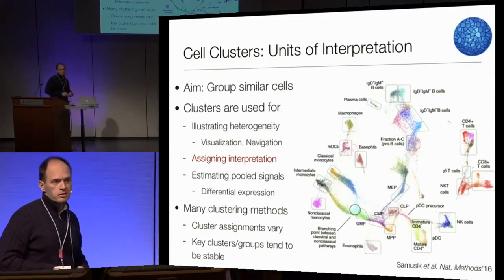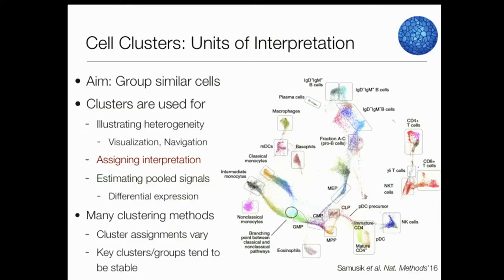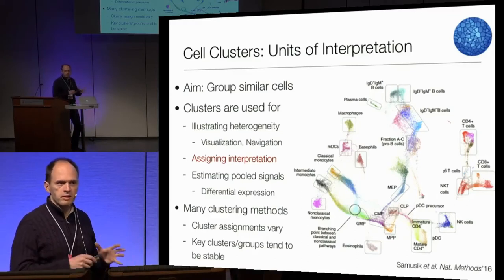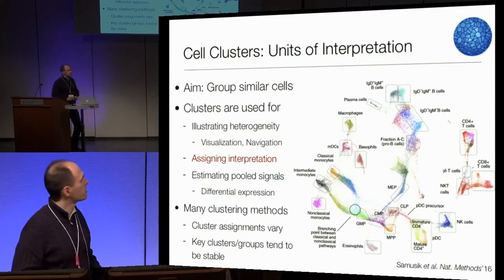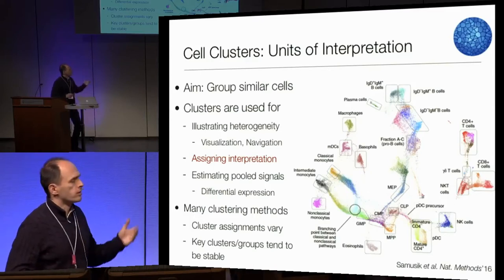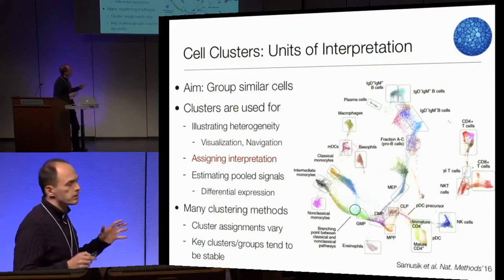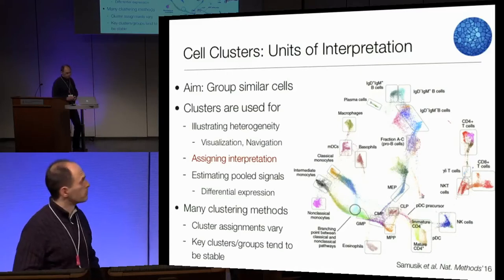There are quite a few clustering methods. You've just seen the talk about different trajectory construction methods, and these are much more exotic — as you might imagine, there are ten times more clustering methods. I'll try to emphasize what the key distinctions are between some classes of these approaches. The results of different clustering methods will vary, not only depending on the methods, but often on the parameters. Martin Hamburg made the SC3 package that tries to build consensus clustering out of multiple methods.